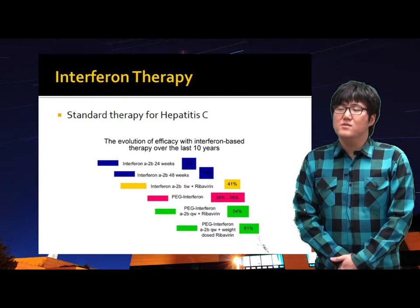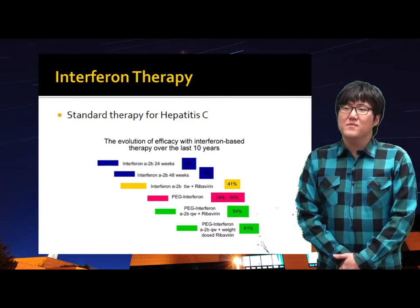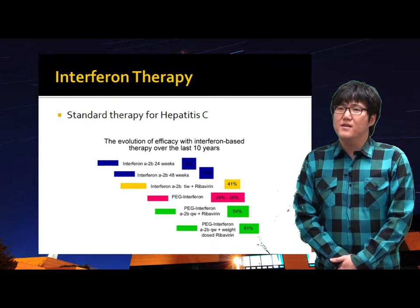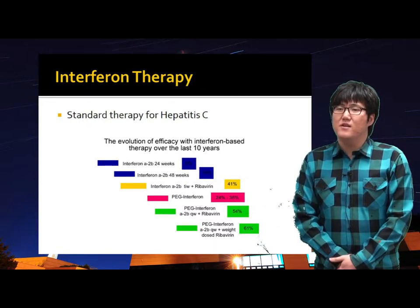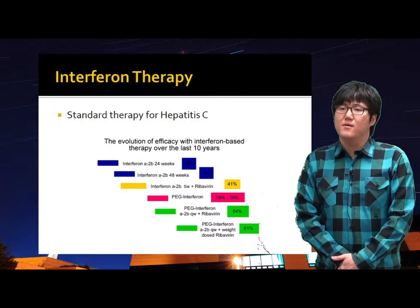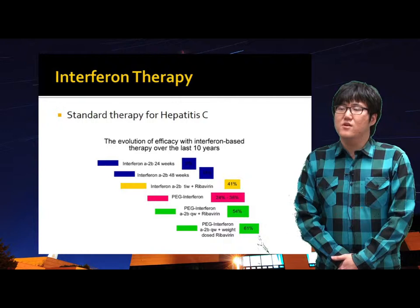Interferon treatment is the most widely used therapeutic strategy for Hepatitis C. For several years, it has been improved by pegylating and combining with ribavirin. Today, PEG-interferon-ribavirin treatment is the standard therapy for Hepatitis C. Also, the addition of protease inhibitors to the combination is being considered to be a new standard of care.